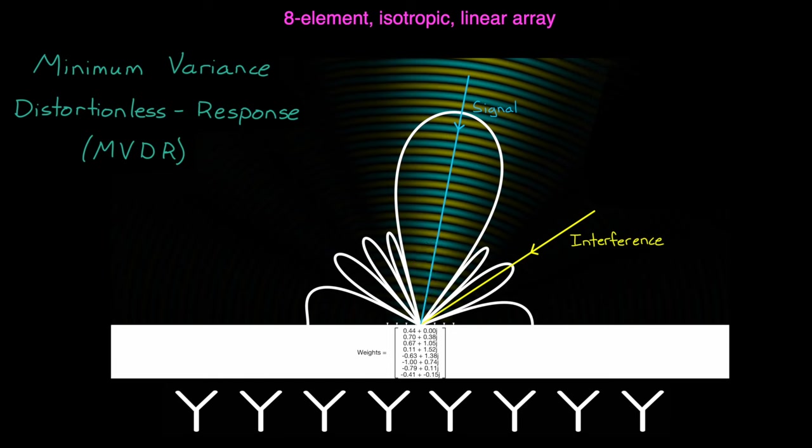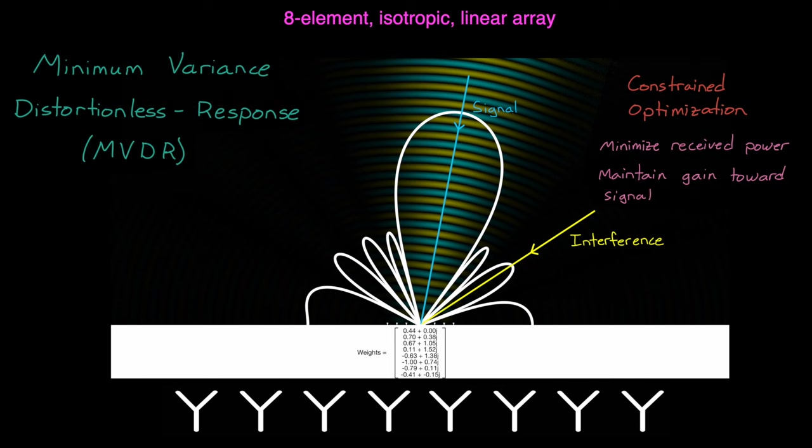So, this is a classic constrained optimization problem. We want to optimize the weights such that the total received power is minimized, but with the constraint, that power in the direction of the signal is maintained.